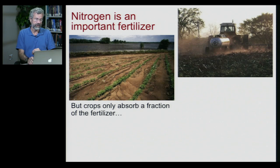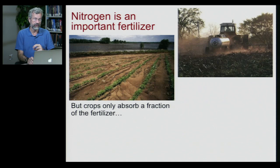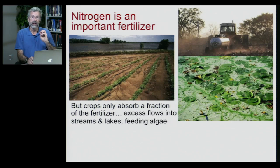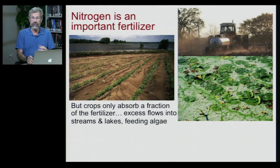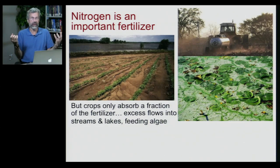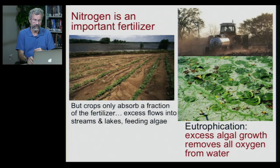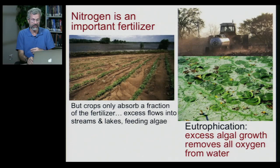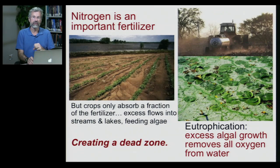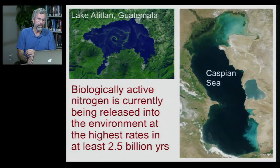The problem with adding fertilizer is that crops can only absorb a small fraction of what we put on the ground. The rest is washed off when it rains and flows into streams and lakes, feeding algae. The algae, which had been limited by an absence of nitrogen, can now grow like crazy — so rapidly that you get eutrophication. That excess algal growth removes all the oxygen from the water, creating dead zones, and we're seeing this on a really broad scale now.